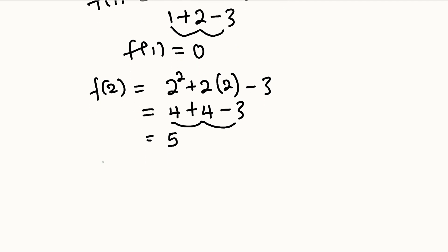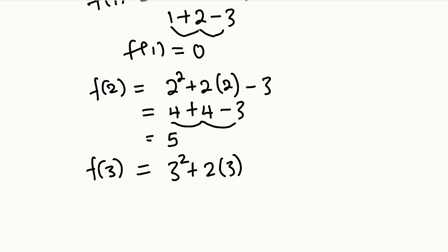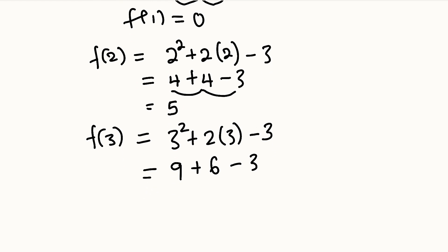For f(3): 3² + 2(3) − 3 = 9 + 6 − 3 = 15 − 3 = 12. So f(3) = 12.